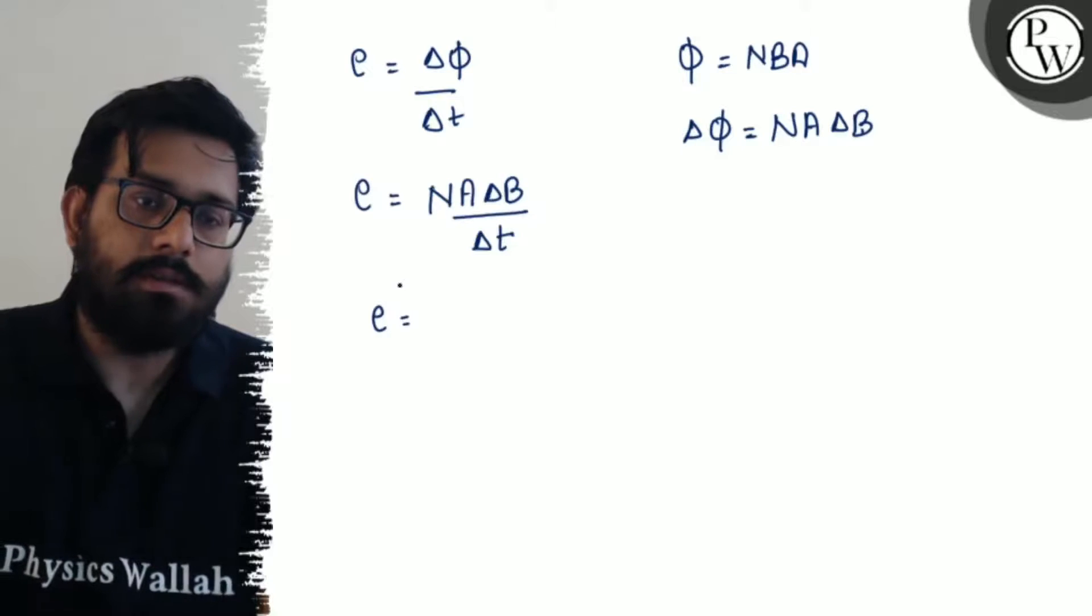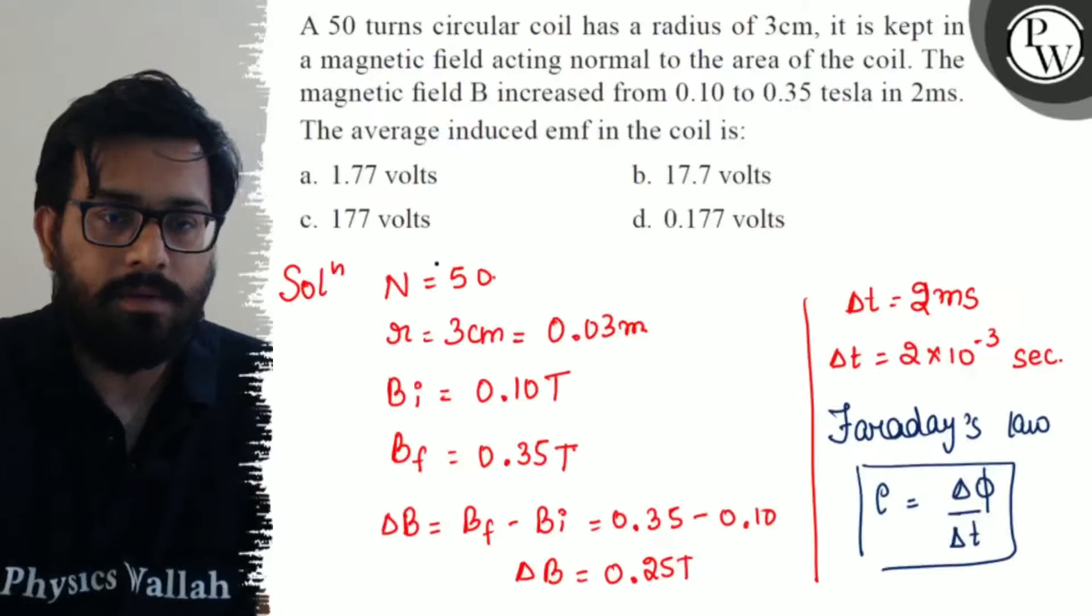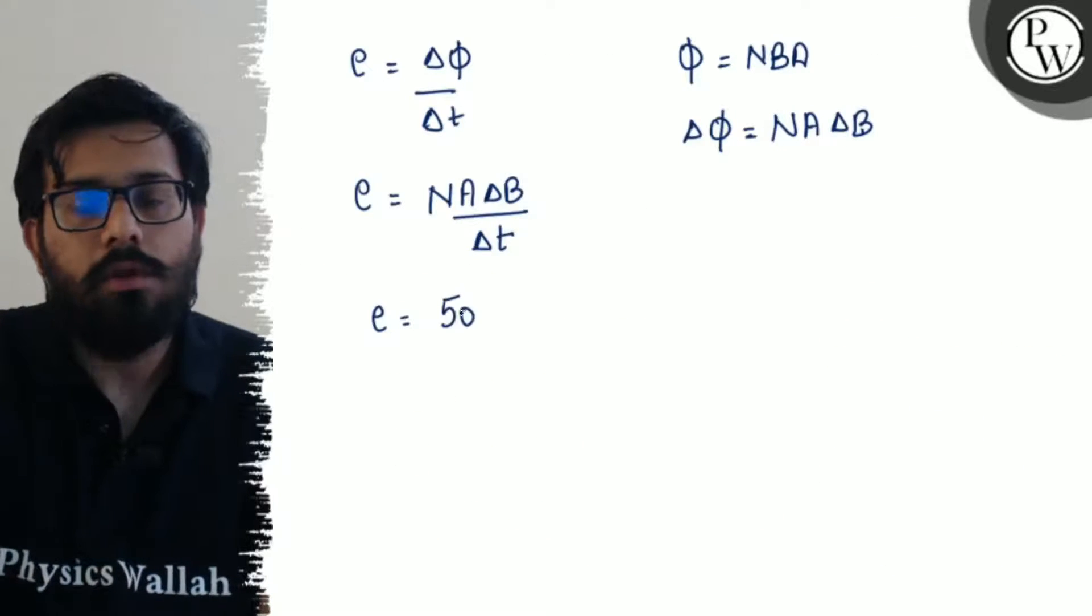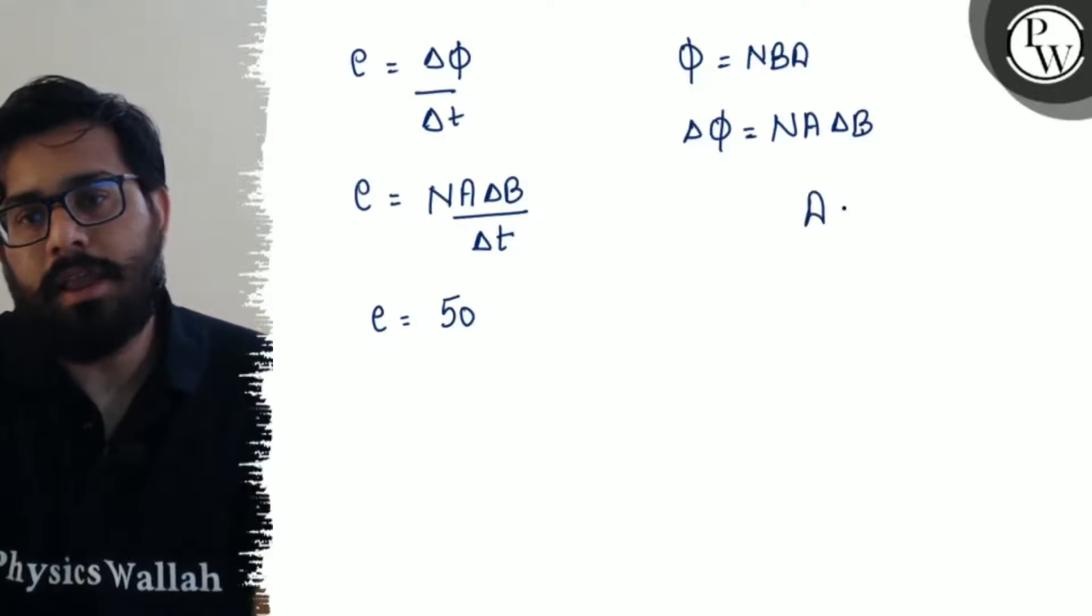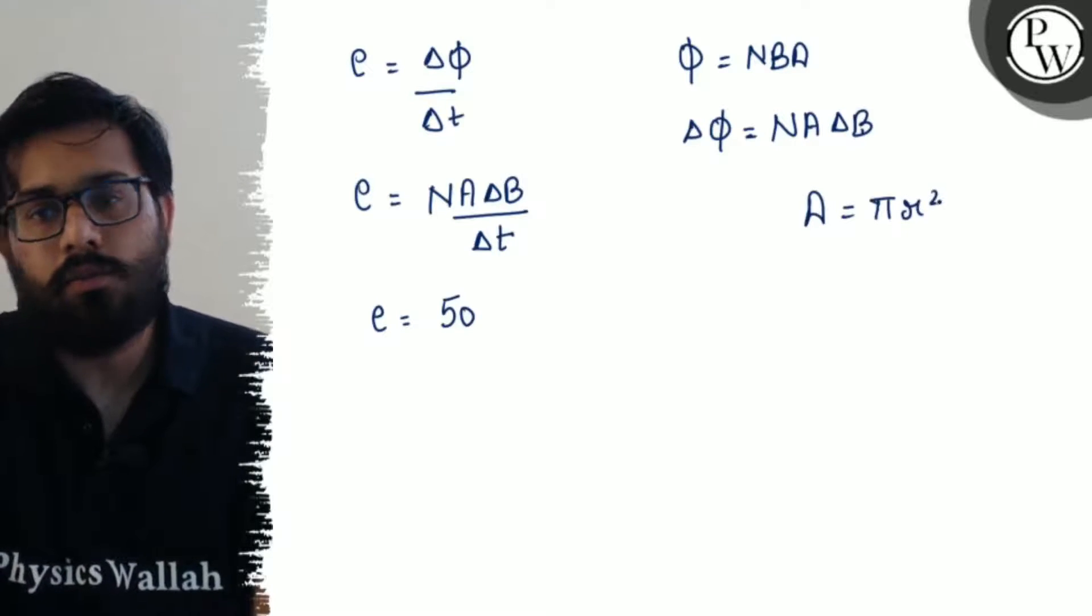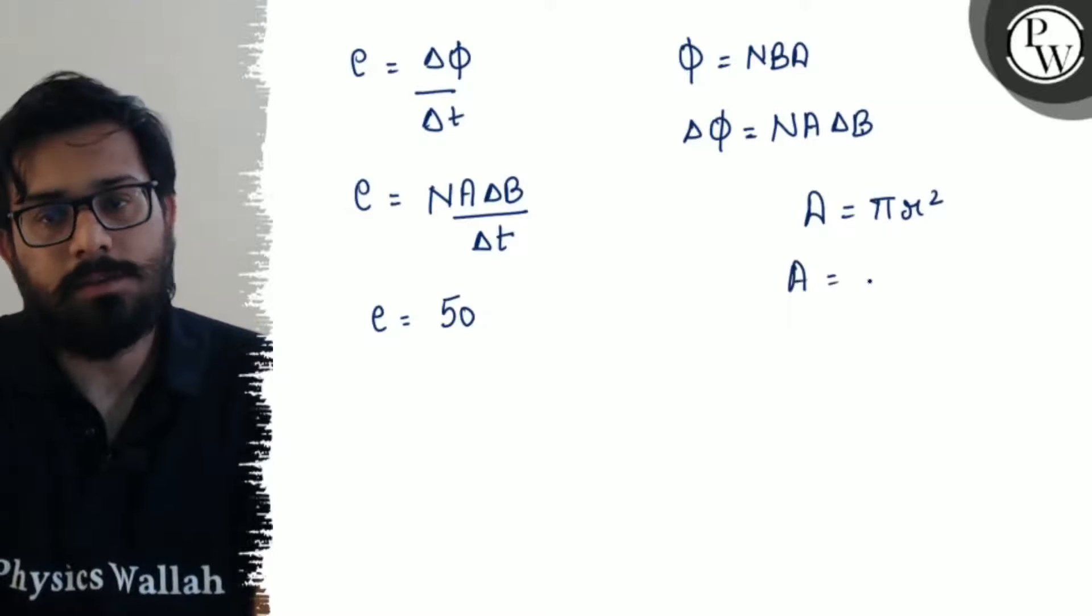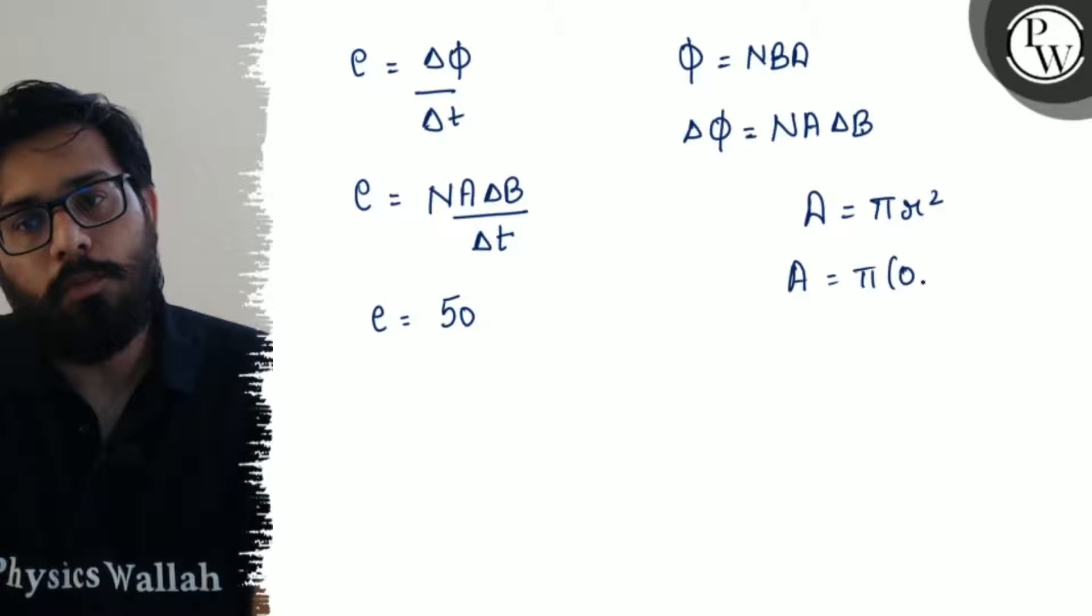E comes out to be number of turns, which is 50, times the area. Since this is a circular coil, area equals pi R squared.